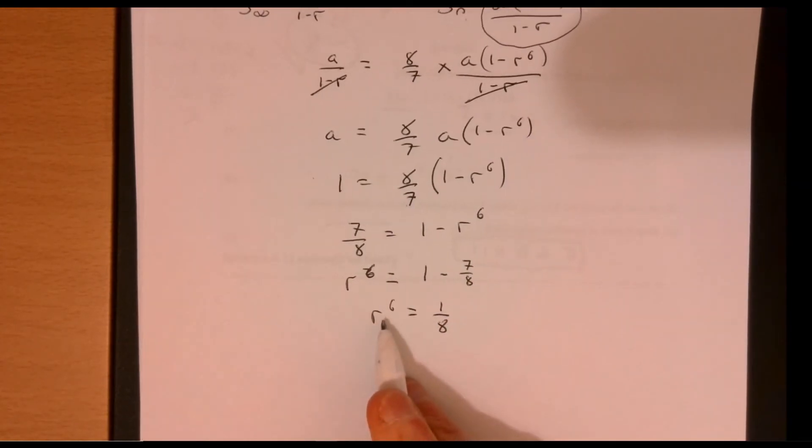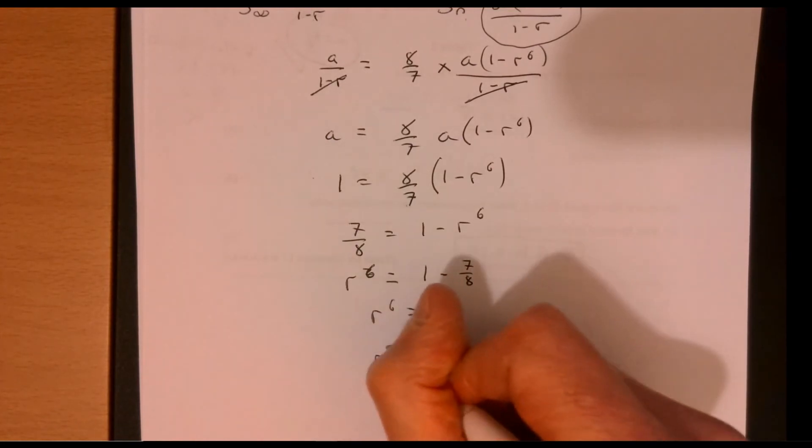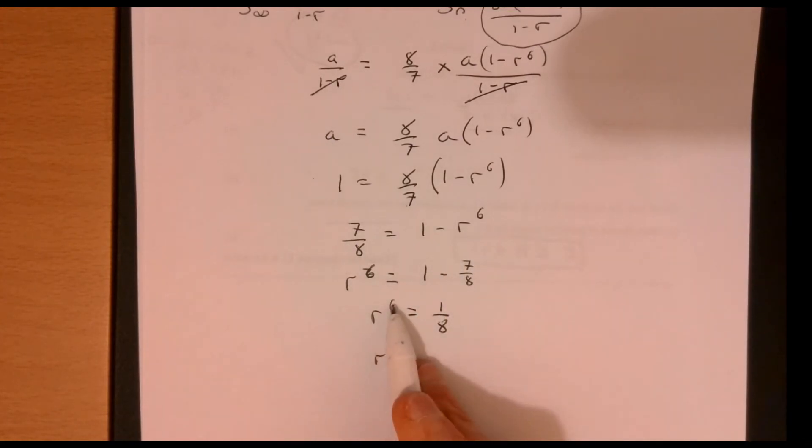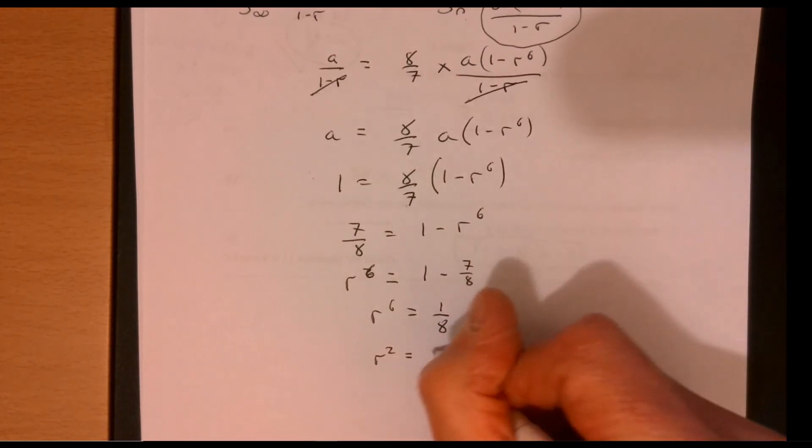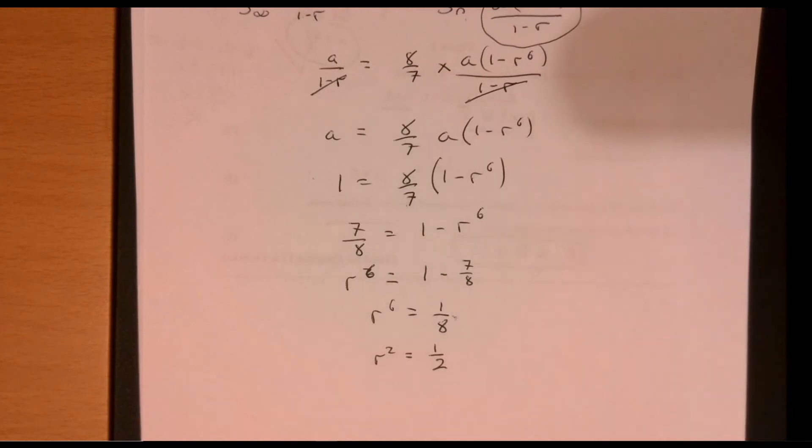How on earth do I do this? Oh, if we cube root. So the cube root of R to the 6 is R squared. The cube root of this. The clue was the 8.